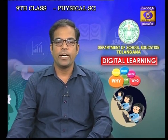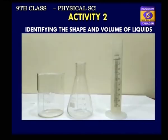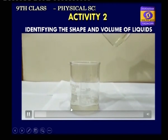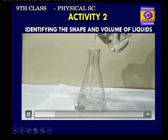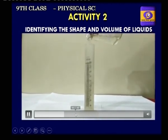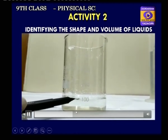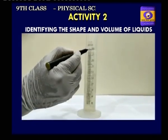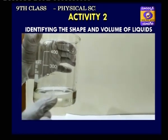Let us perform an activity identifying the shape and volume of liquids. Take three different containers: a glass beaker, conical flask, and measuring jar. Pour the same amount of water into each container and mark the level of water in each. The water occupies the shape of the glass beaker, the shape of the conical flask, and the shape of the cylindrical jar.